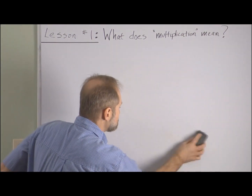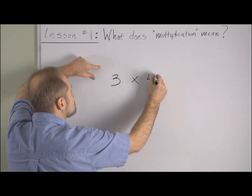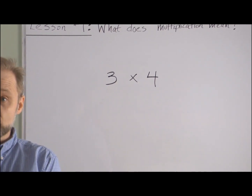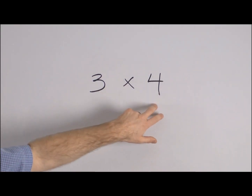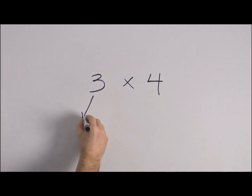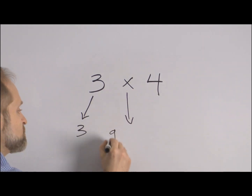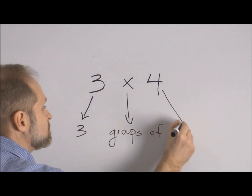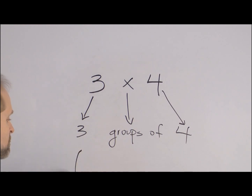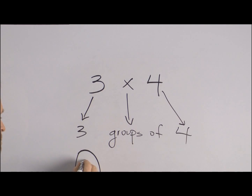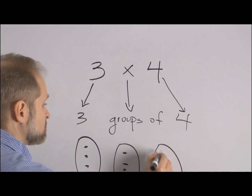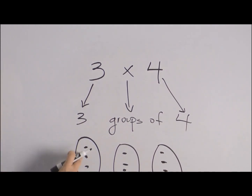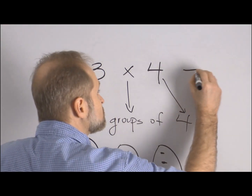Let's try one more. Please copy this down, try this, pause, and then we'll go through it. Okay, let's take a look at this. Hopefully you found that 3 times 4 equals 12. Let's see how that works: times means 'groups of.' We want to draw a group of 4 dots, and then 3 of those groups. Count the dots — a total of 12.